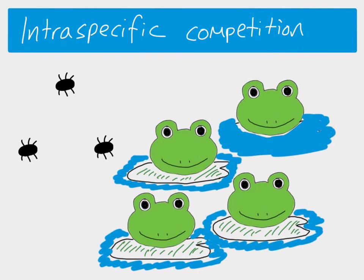This frog here has lost its lily pad. We're looking at intraspecific competition for a habitat resource — lily pads might be where they breed or where they get shelter. Because there are now only three lily pads and four frogs, they're competing, and this frog is not as good at competing. Maybe it's not able to show dominant behaviour, maybe it's not as aggressive, and therefore because it can't get a lily pad it's going to die.